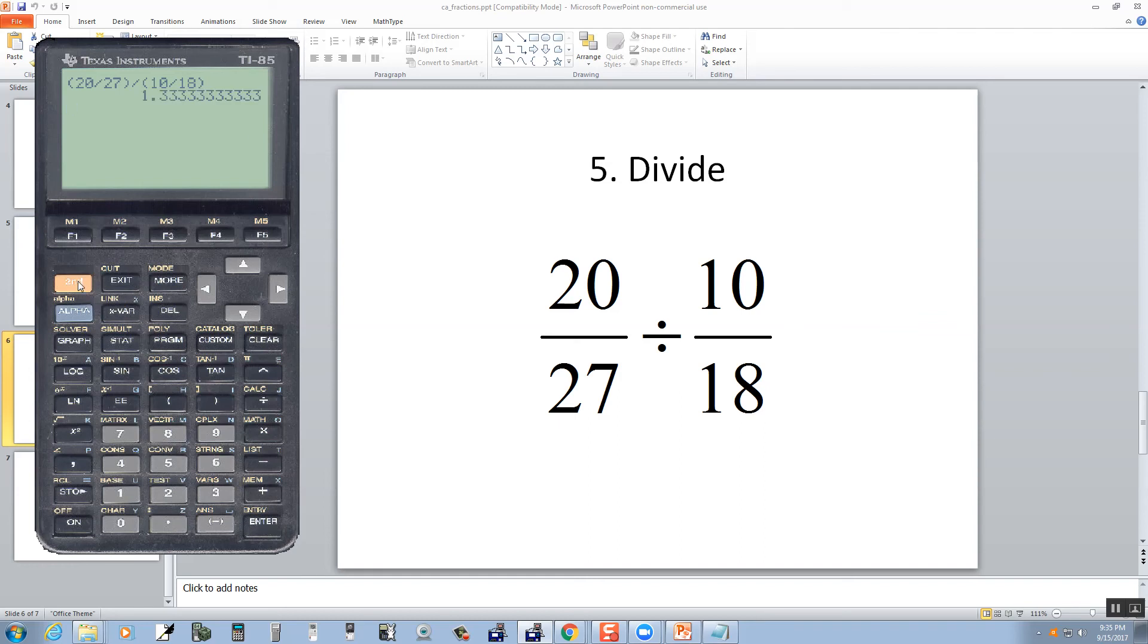We get a decimal, so then I'm going to change it to a fraction. I'll do my second times to bring up the math. I'll do F5 for miscellaneous. I'll do the more to go to the second page. And then F1 for frac, and then push enter.